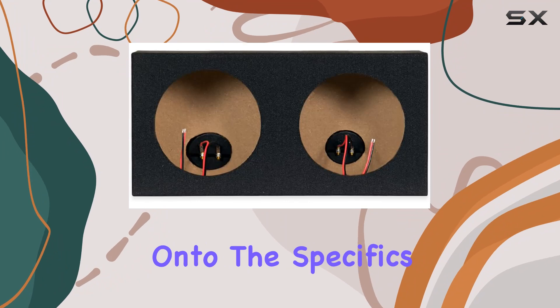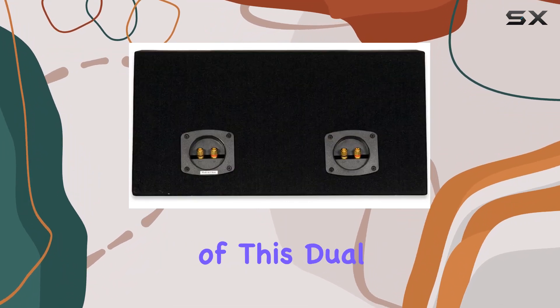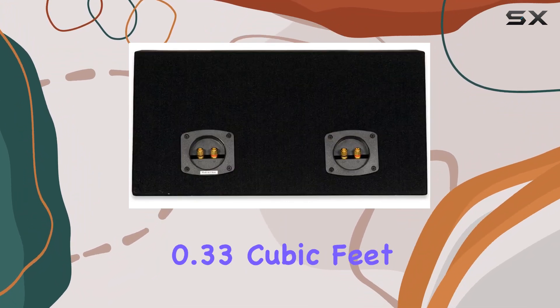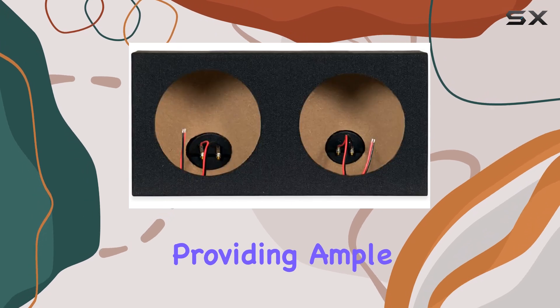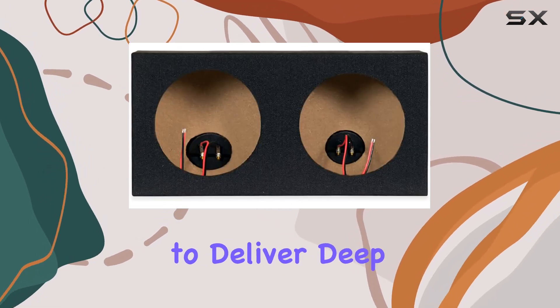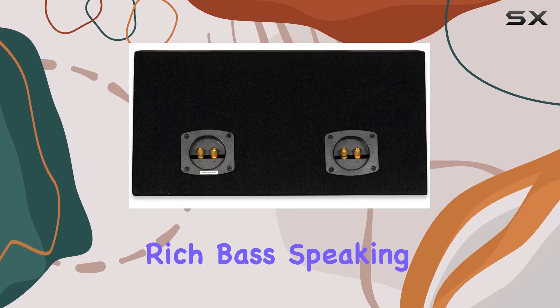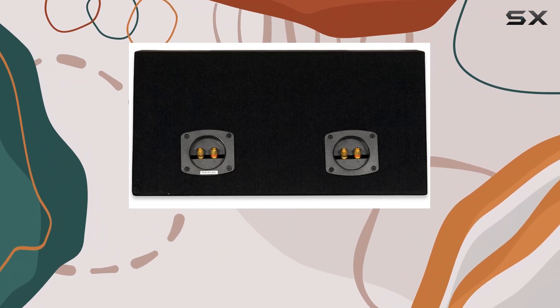Now onto the specifics: each chamber of this dual enclosure has a volume of 0.33 cubic feet, providing ample space for your 8-inch woofers to deliver deep, rich bass. Speaking of woofers, the holes are precisely sized at 7.125 inches in diameter.